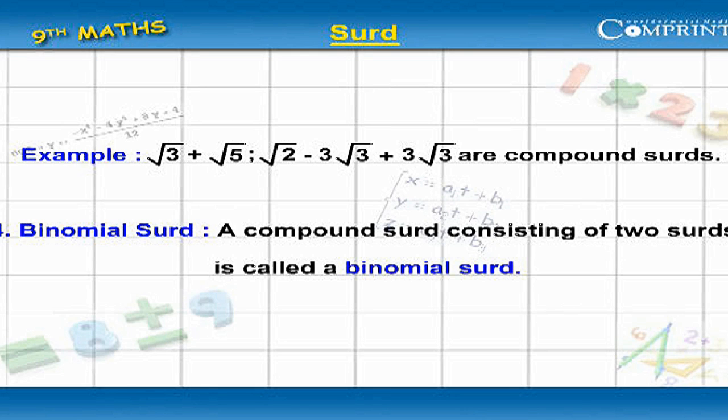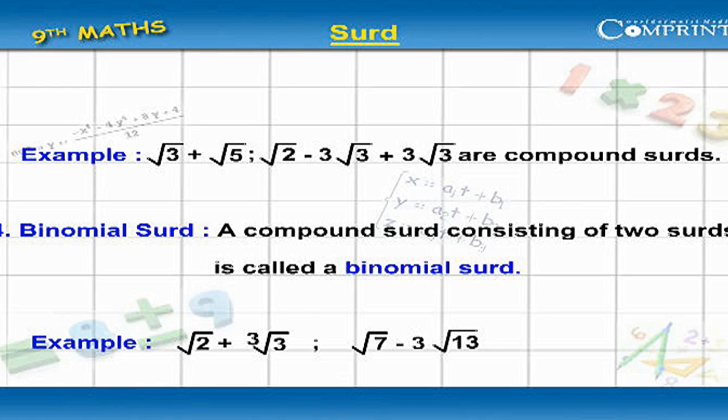Binomial surd: A compound surd consisting of two surds is called a binomial surd. Example: root 2 plus 3 root of 3, root 7 minus 3 root 13.